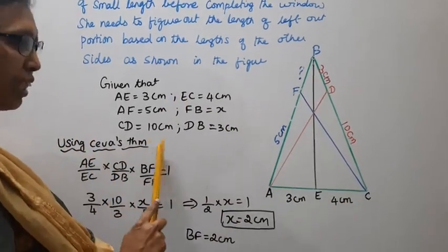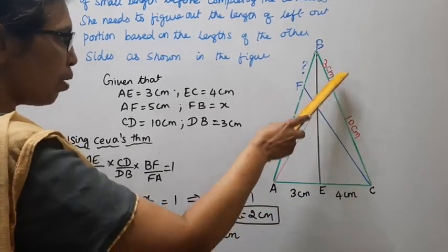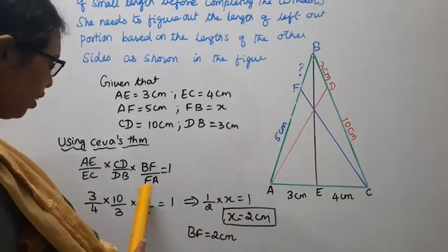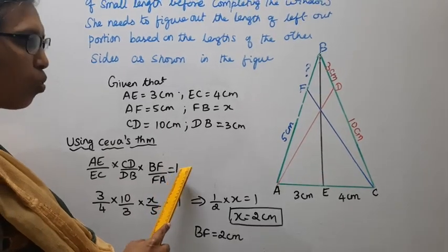Using Ceva's theorem: AE/EC × CD/DB × BF/FA = 1.